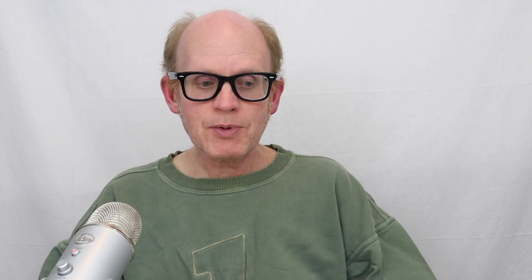When we do a confidence interval we often use a confidence level like 99, 95, or maybe 90%. A 99% confidence level means we will be 99% certain that the confidence interval we calculate will include the true population proportion. A 90% confidence level means we're only 90% certain. So if we want to be more certain that the interval includes the true population proportion, we need a larger interval.